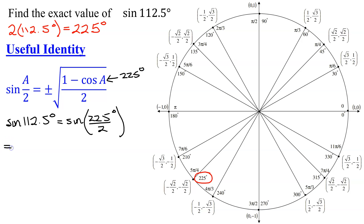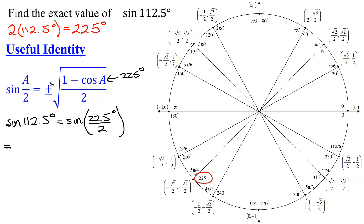Before I work out any numbers, I have to figure out: do I need the plus or the minus on this square root? I have the sine of 112.5 degrees. 112.5 degrees is in this region on the unit circle — it's in quadrant 2. Is the sine function positive or negative in quadrant 2? Remember, the sine function is y over r. Y values are positive in quadrant 2, so the sine function is positive in quadrant 2.